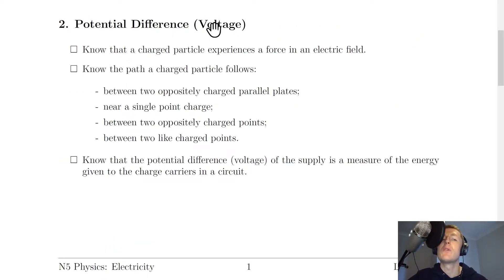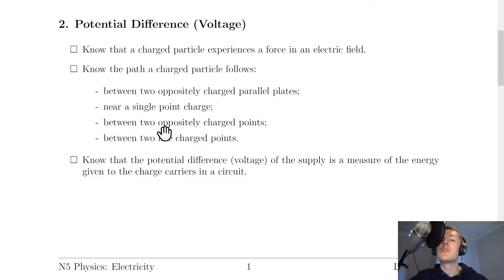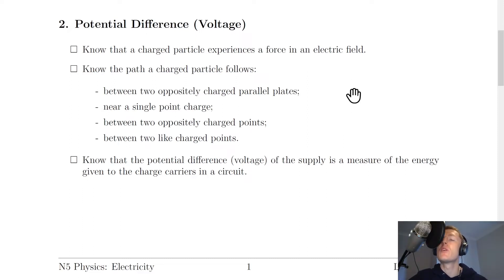For section two, potential difference (i.e. voltage), you need to know that a charged particle will experience a force in an electric field. You should also know the path a charged particle takes when between two oppositely charged parallel plates, near a single point charge, between two oppositely charged points, and between two like charged points. This is really about knowing what electric field lines look like and what happens when you bring a charge near them.